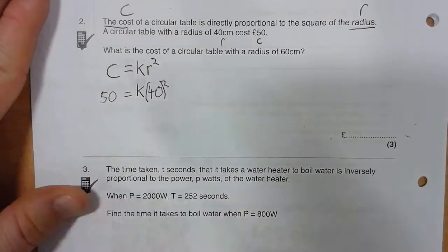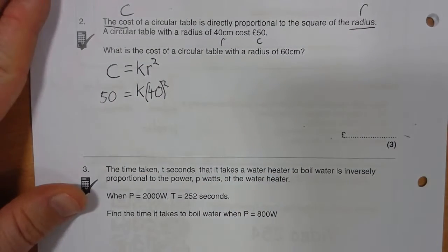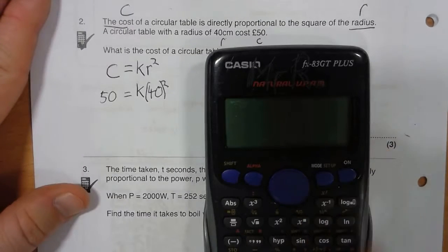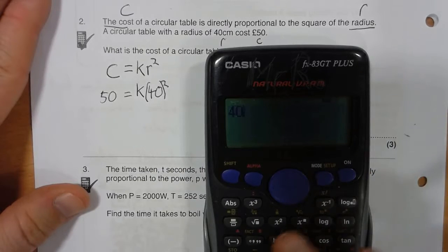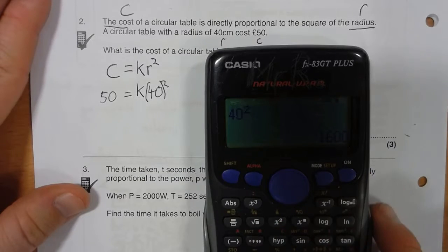Now this one is calculator allowed. You should be able to do 40 squared, but it's calculator allowed, so you're able to use a calculator.